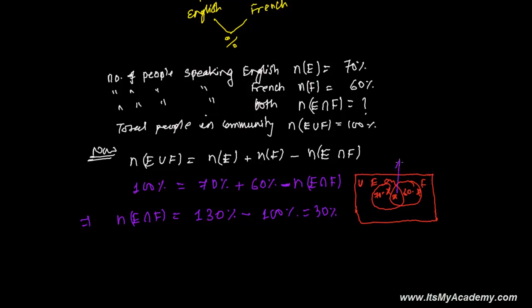So 30% people can speak both languages. 70 minus 30, it means this is 40%, 40% people can only speak, they only speak English, not French or not any other language. And 60 minus 30, again 30% people, this 30% people can only speak French, they cannot speak English, they only know how to speak French.